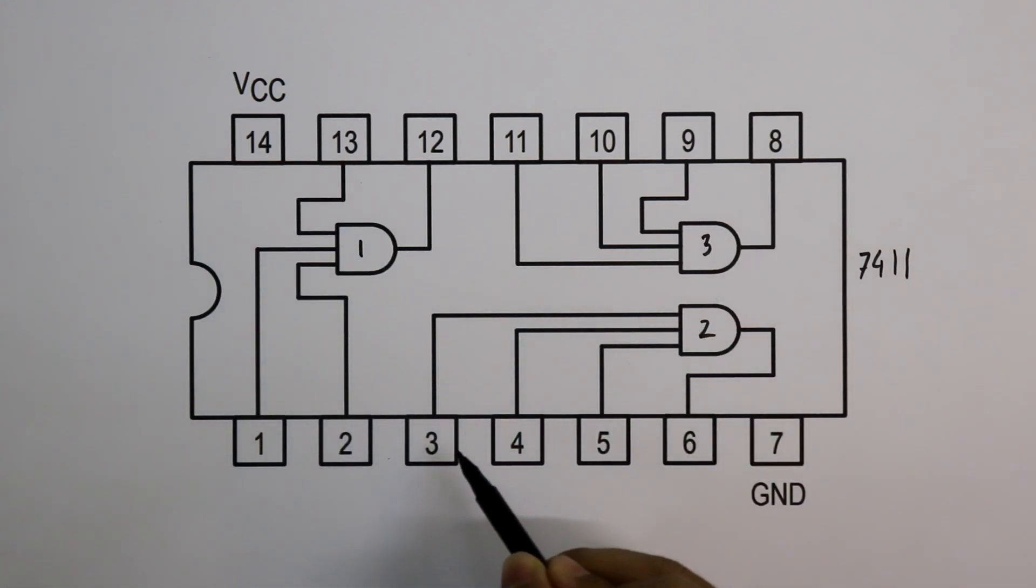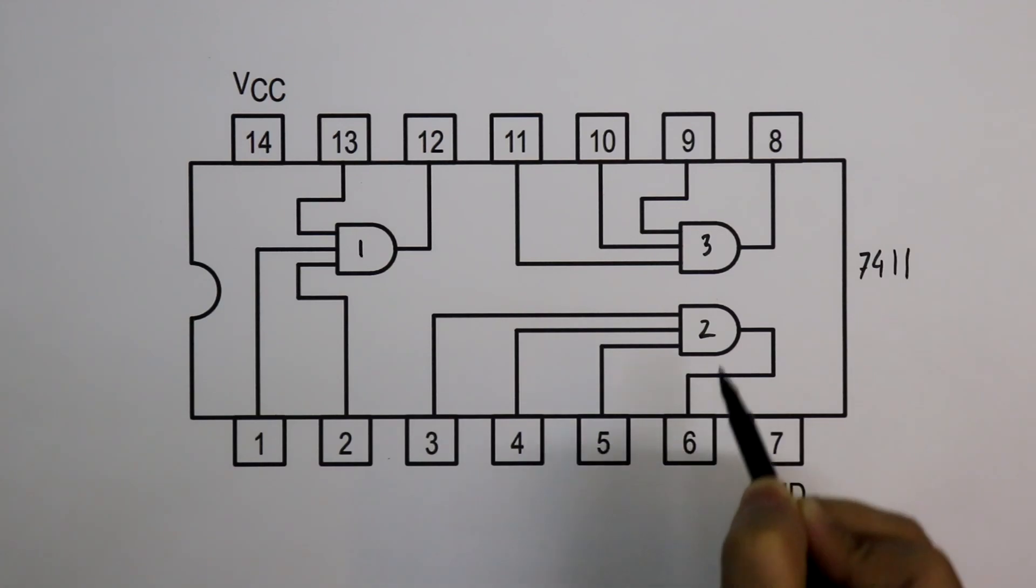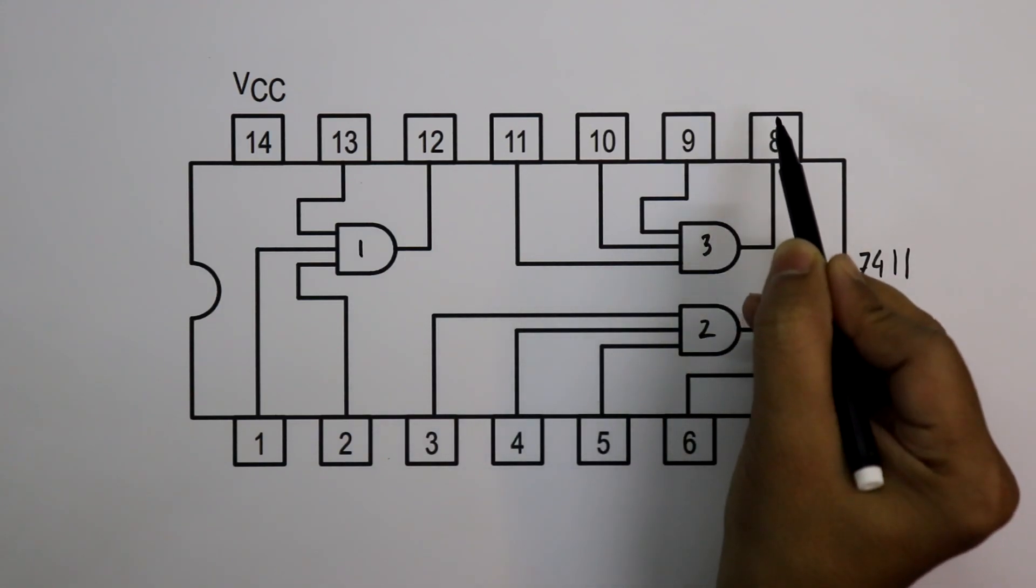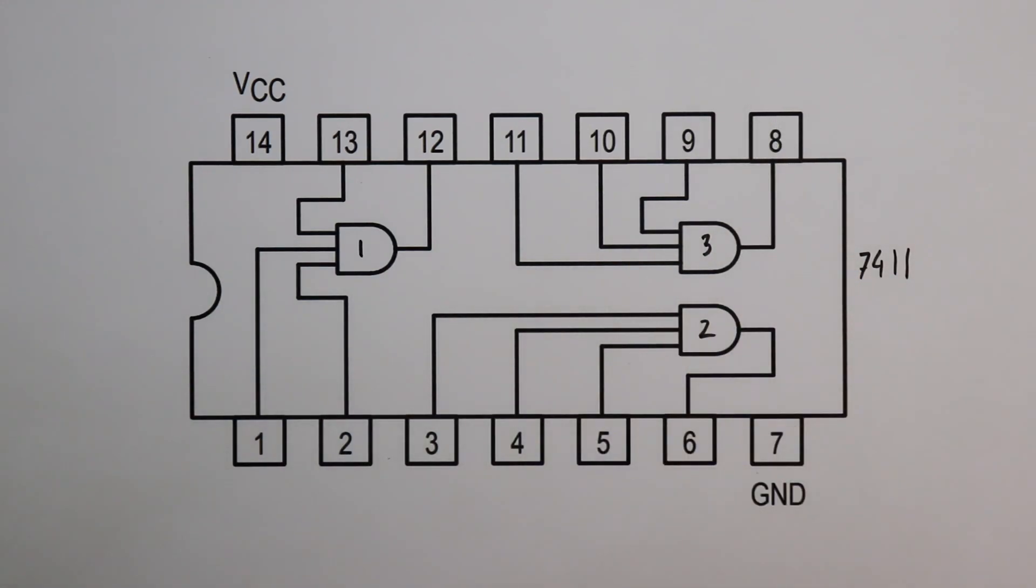For gate number 2, pin 3, 4, 5 are the inputs and pin number 6 is output. For gate number 3, pin number 9, 10, 11 are inputs and pin number 8 is output.